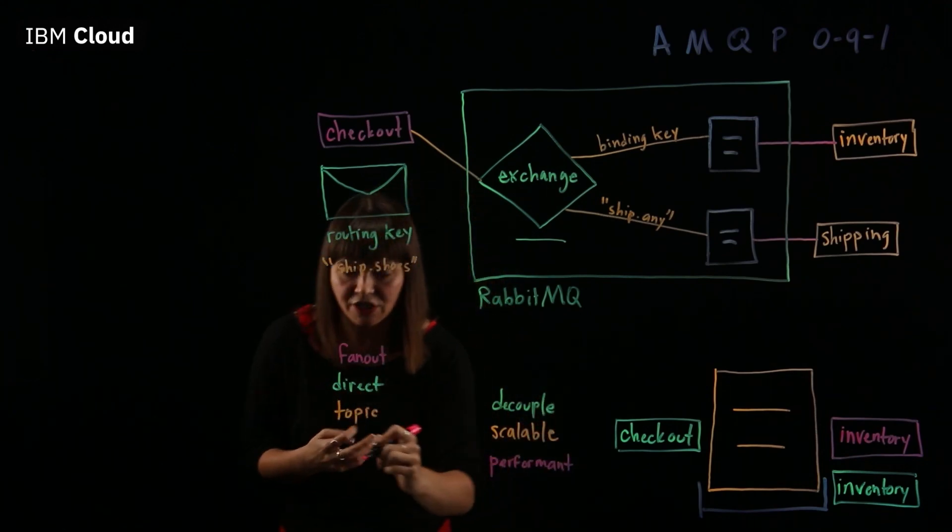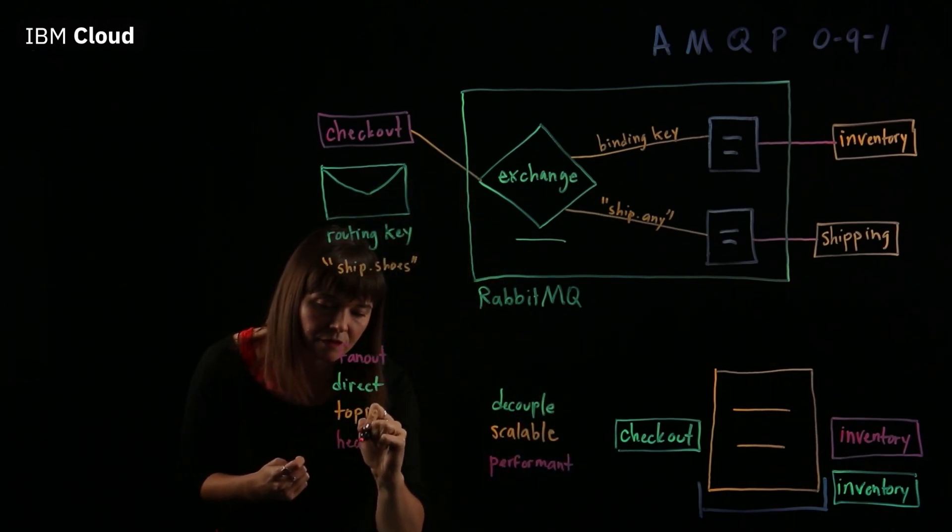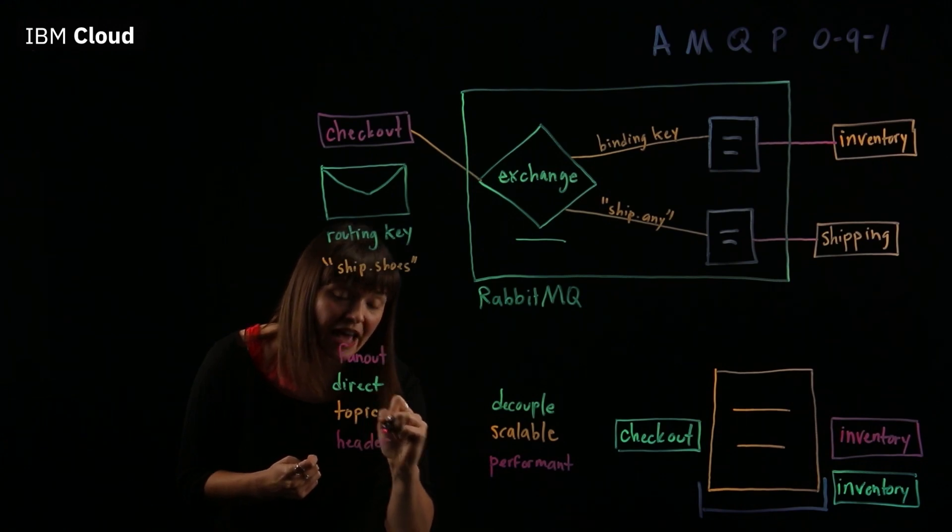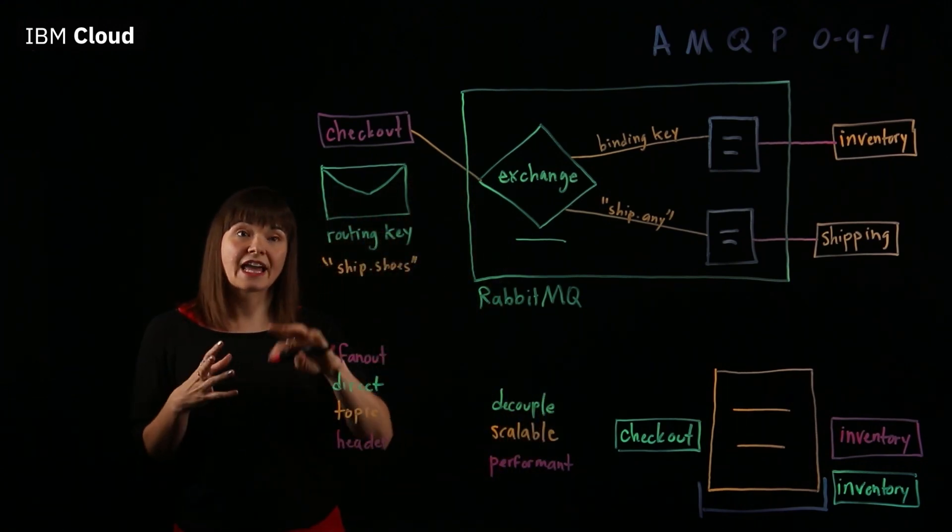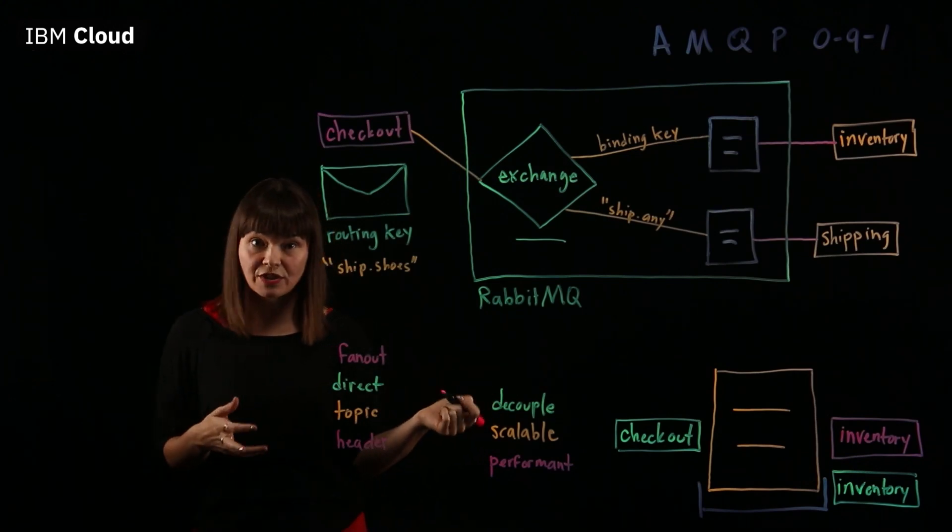There's also a header exchange. With a header exchange, the routing key is ignored completely, and the message is moved through the system according to the header.